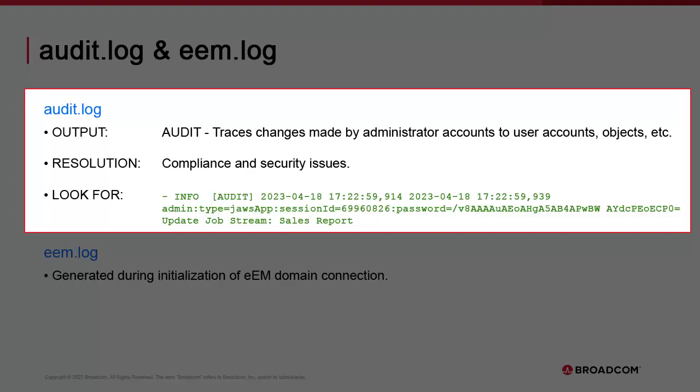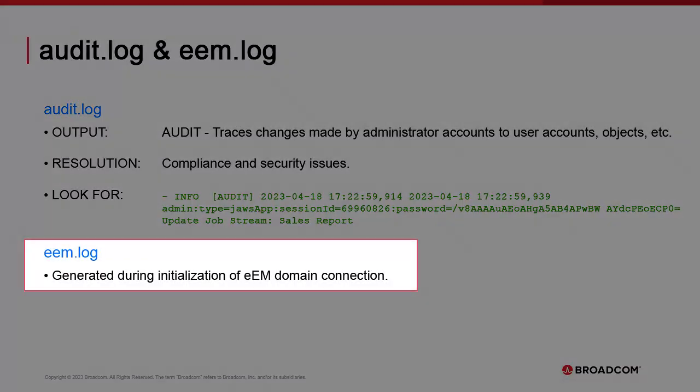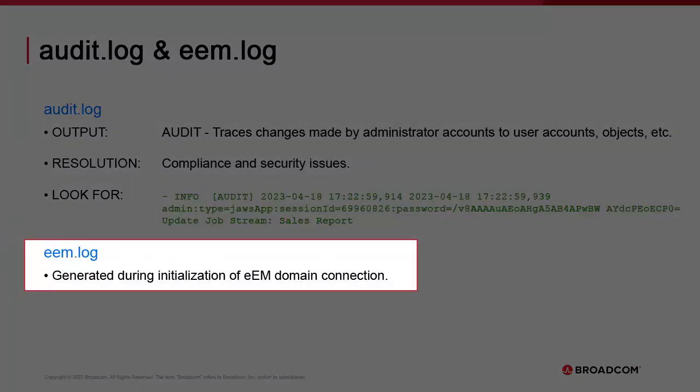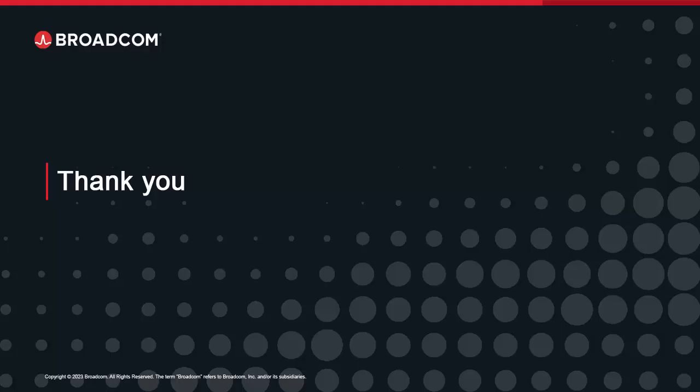This includes updates to other user accounts, updates to job stream definitions, business areas, and so forth. The purpose of this log is compliance and governance. We want to keep a paper trail of these updates in the event the organization is audited. Finally, the EAM log shows connections to the EAM domain if you've deployed an EAM server.